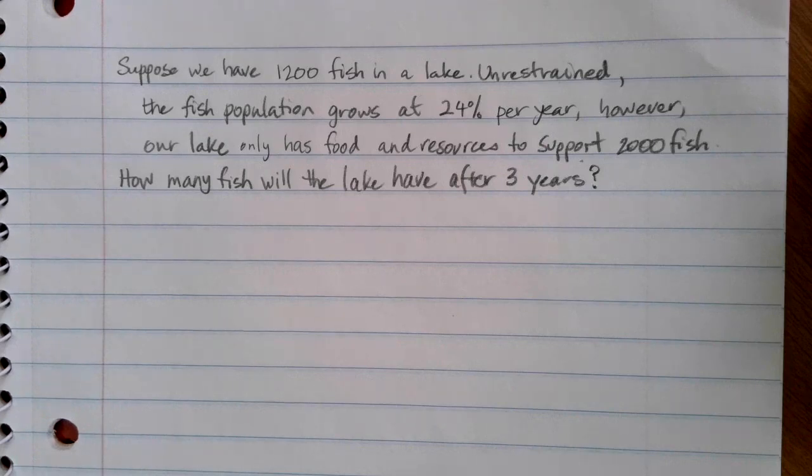Let's suppose that we have 1,200 fish in a lake. Unrestrained, the fish population grows at 24% per year. However, our lake only has the food and resources to support 2,000 fish. How many fish will the lake have after three years?